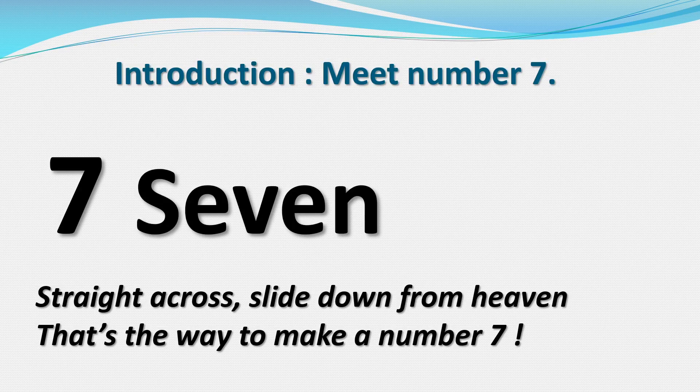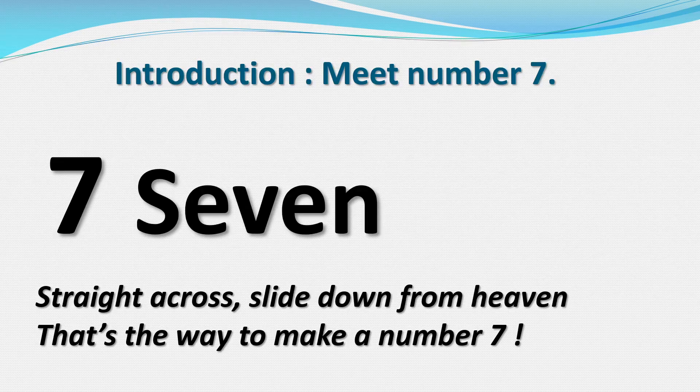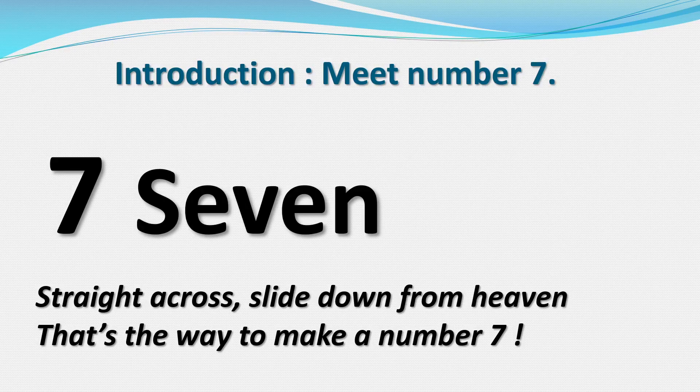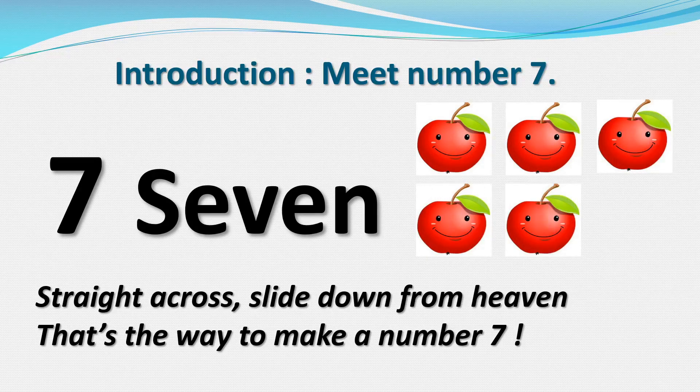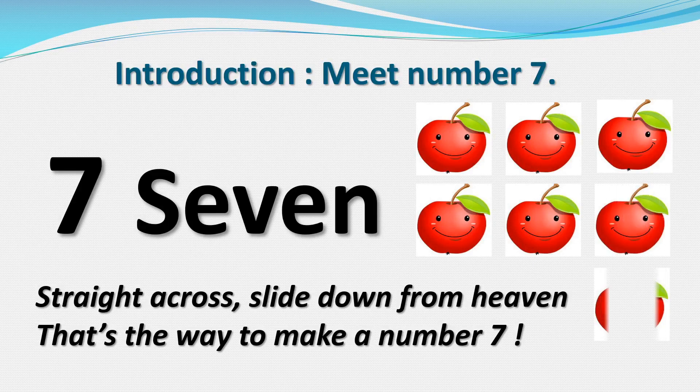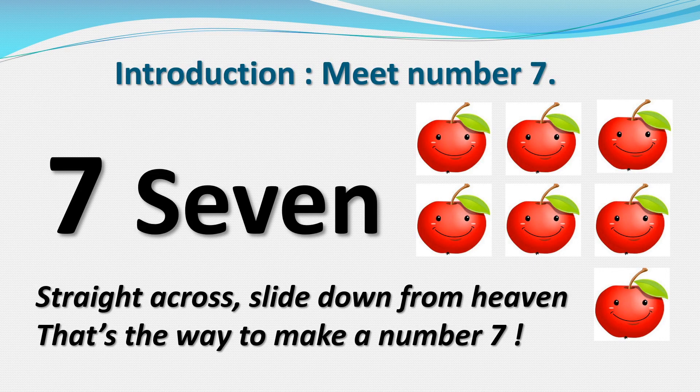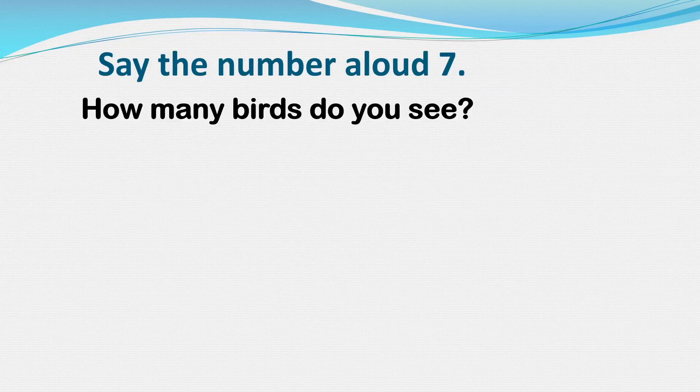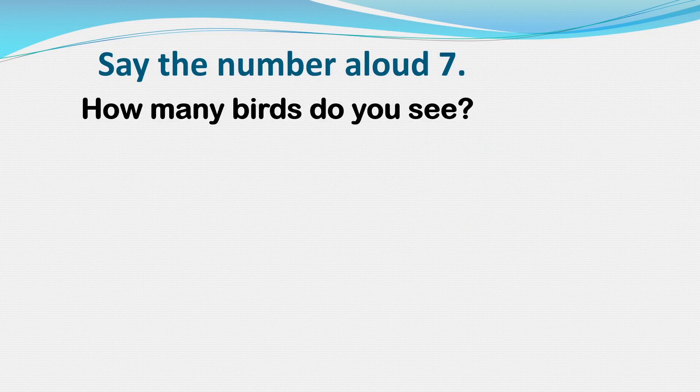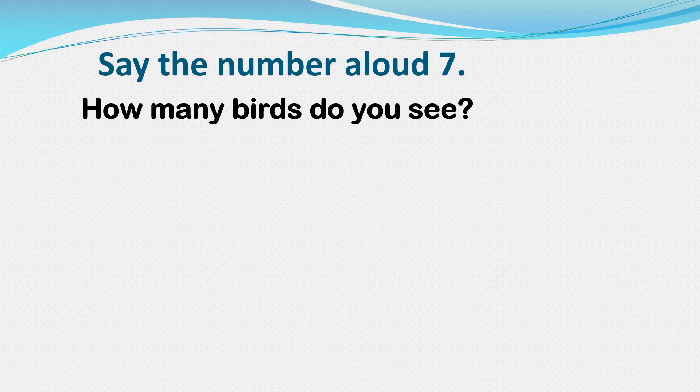Great! Now let us count how many apples are there. One, two, three, four, five, six, and seven. So there are seven apples. Say the number seven, kids. Here you have to count how many birds do you see.